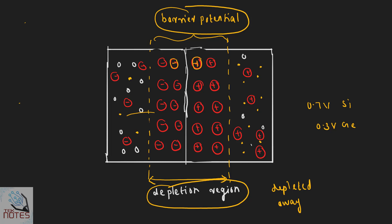The barrier potential for silicon is 0.7V and for germanium is 0.3V. When P and N-type are combined together, holes diffuse from P-type to N-type, and electrons diffuse from N-type to P-type. At the junction, electron-hole recombination occurs, and charge carriers are depleted away from the junction — that junction region is known as the depletion region.